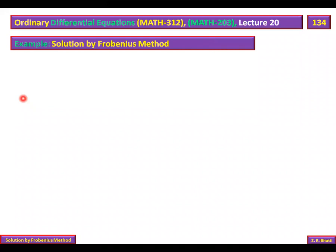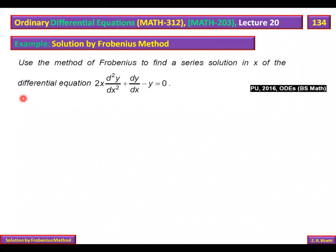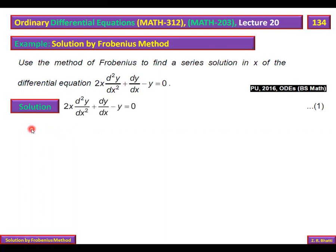We use the method of Frobenius to find the series solution in x of the differential equation: 2x d²y/dx² + dy/dx − y = 0. This is a second-order differential equation. To find the singular points, we set the coefficient of the highest-order derivative equal to zero.